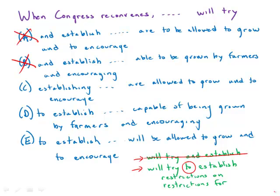The second issue is 'restriction on' versus 'restriction for.' 'Restriction on' is correct, while 'restriction for' is incorrect. This is another rule that helps eliminate some of the answer choices.